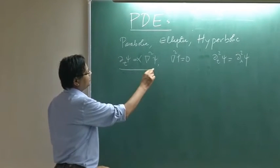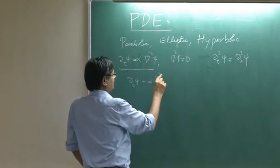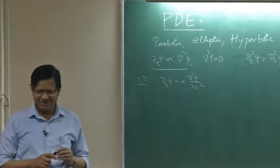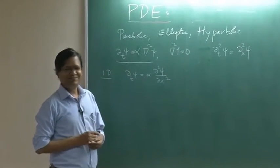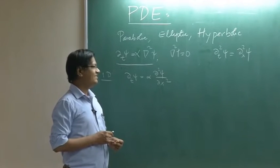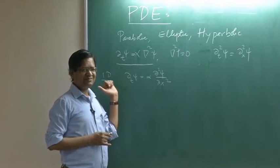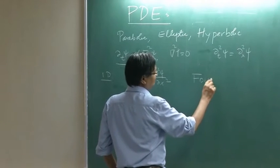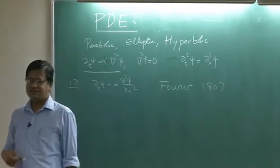Let us look at first this equation, how to solve it in 1D. d/dt psi is alpha d²psi/dx². You know how to solve this? By what method? Separation of variable, then what? Well, first who solve this equation? The first person who solve this equation? This is in last semester. This was done by Fourier first. Well it is not separation of variable, but Fourier 1807. And in fact, the Fourier series, he solved with Fourier series.